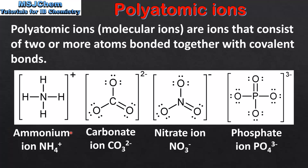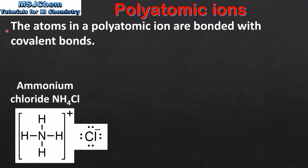From left to right we have the ammonium ion, the carbonate ion, the nitrate ion, and the phosphate ion. As we can see from these Lewis structures, polyatomic ions consist of two or more atoms bonded together. The atoms in a polyatomic ion are bonded with covalent bonds.